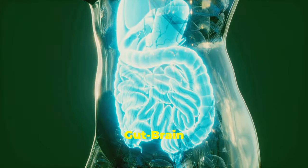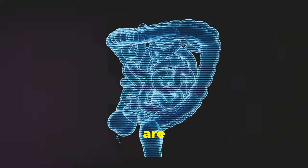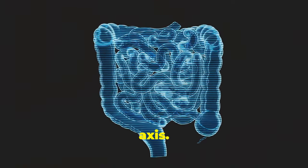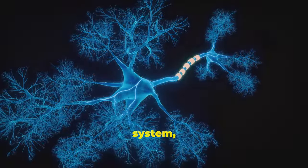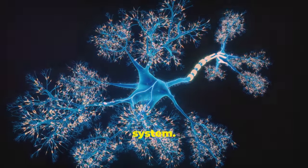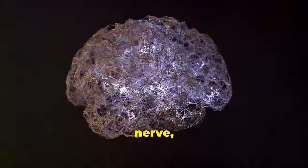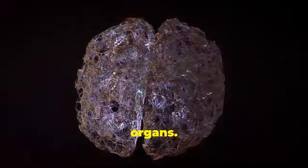The gut-brain axis, a two-way street. The gut and the brain are in constant communication through a complex network known as the gut-brain axis. This two-way communication highway involves various pathways, including the nervous system, the immune system and the endocrine system. One key player in this communication is the vagus nerve, a long nerve that connects the brain to the gut, heart, lungs and other organs.